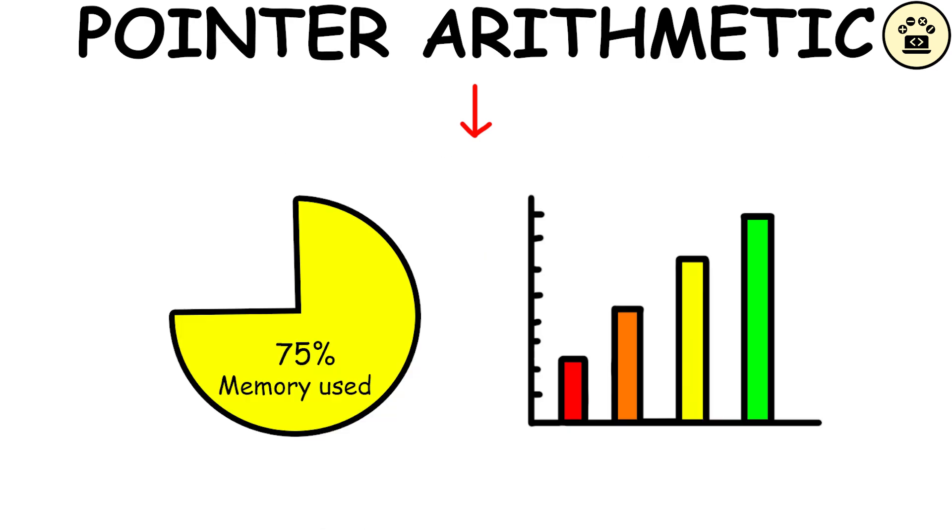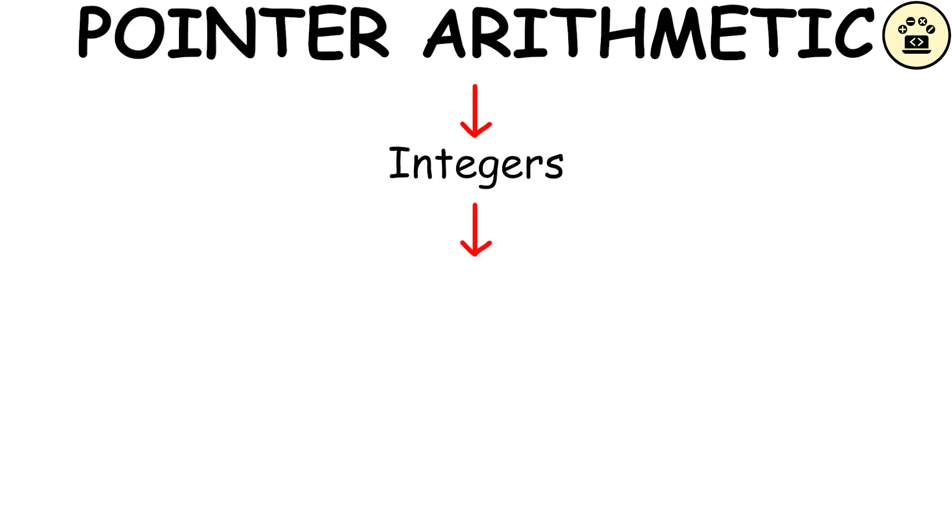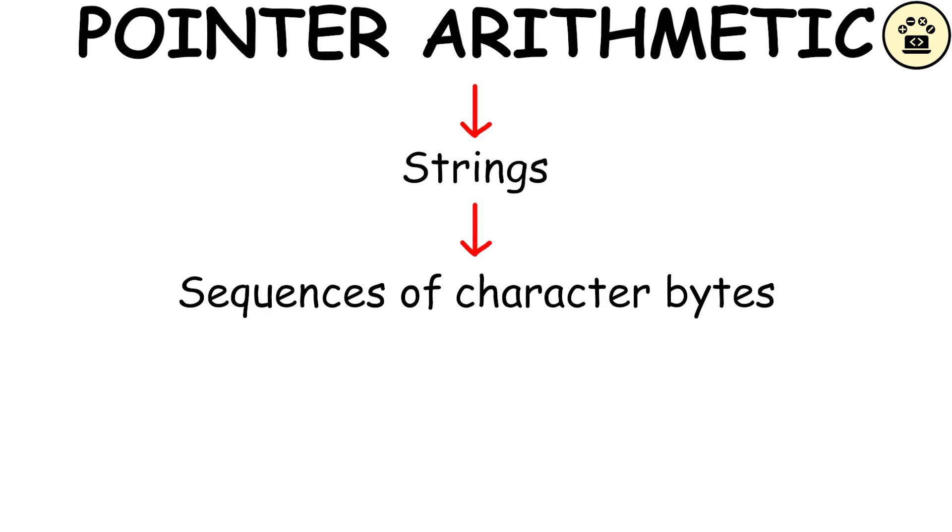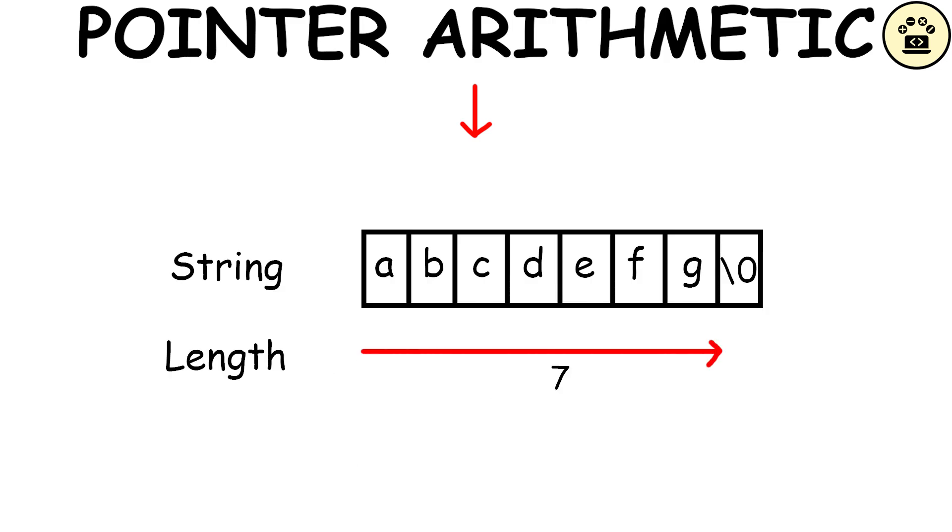Regarding memory usage by data types, integers typically occupy four bytes of memory. Characters usually require one byte of memory. Strings are sequences of character bytes terminated by a null character, with memory usage varying based on string length.